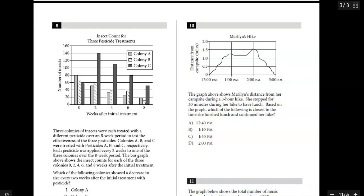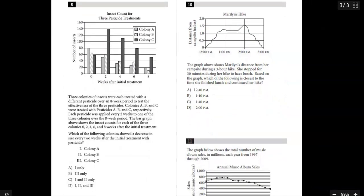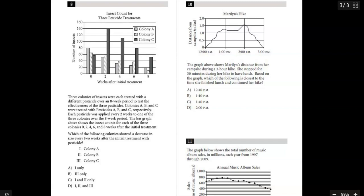All right, number eight. Here, pretty long question, so I'm going to kind of shrink it down so we can see what's going on. It says the insect count for three pesticide treatments. Three colonies of insects were treated with different pesticides over eight weeks: colonies A, B, and C. So right here, if you kind of look at this chart, you can see that A is kind of the gray, B's the white with the dots, C is the really dark bars. It was done over the course of eight weeks, so you have week 0, 2, 4, 6, and 8. So the question is right here in the middle, so there's a lot of reading before you actually get to it. Which of the following colonies showed a decrease in size every two weeks after the initial treatment?